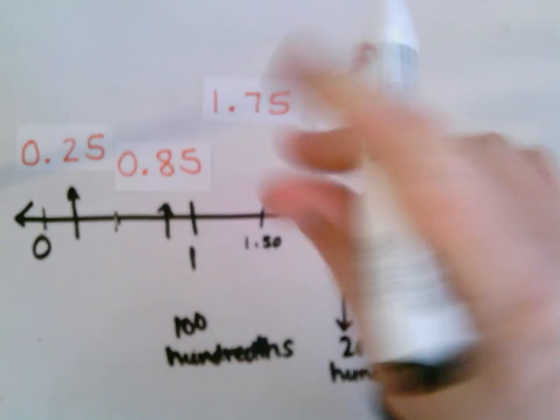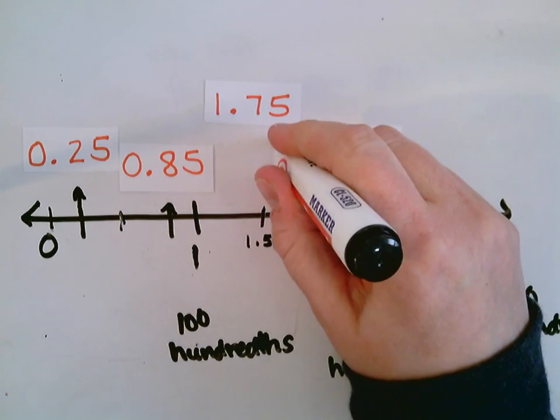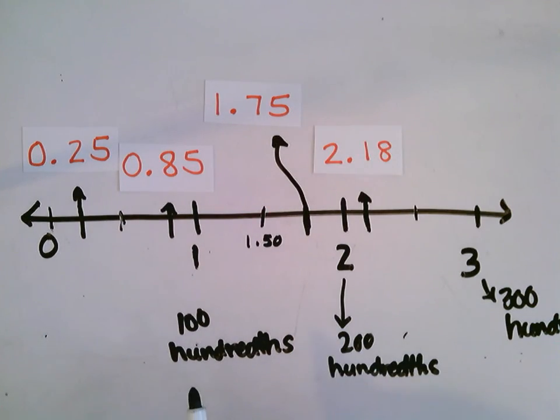So this is for my 1.75. I'm going to draw his line. I'm going to draw his arrow up here. He comes right in there on our number line.